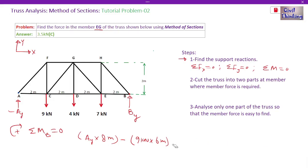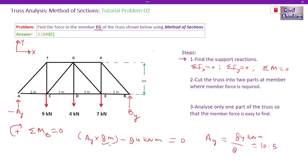So AY × 8 = 84 kN·m, which gives AY = 84 ÷ 8 = 10.5 kN. The units check out: kN·m divided by m gives kN. So AY = 10.5 kN.